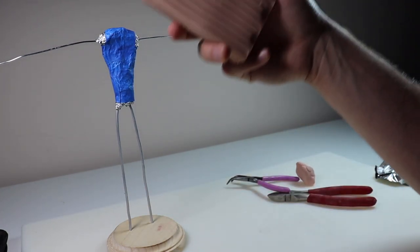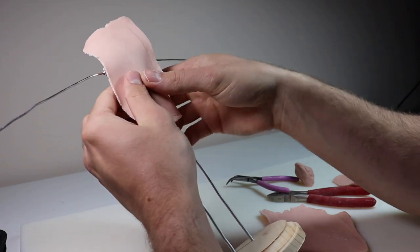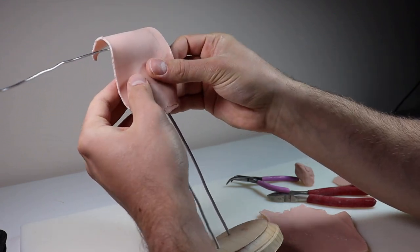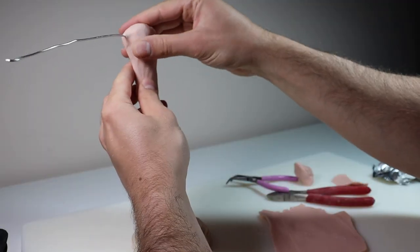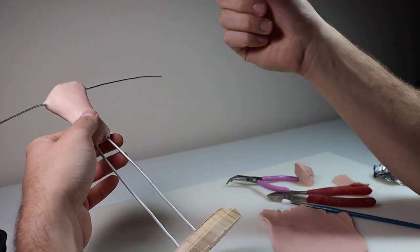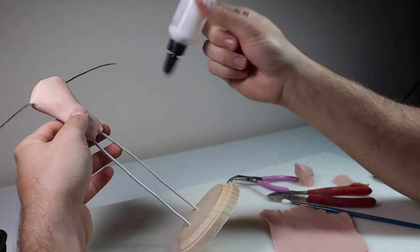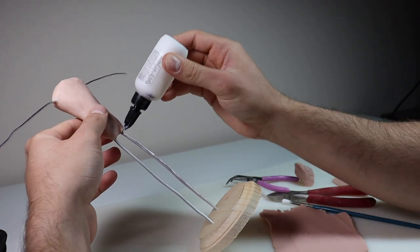All right cool check that out. So now we're going to start adding our clay. For this project of course I'm using Super Sculpey Original. All right now before I start adding clay to the wire here just want to put some bake and bond on it to make it stick better.